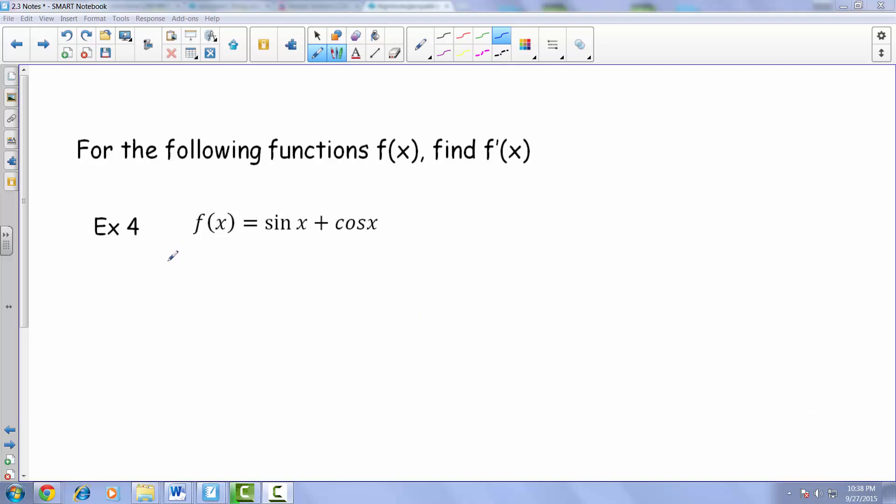If you take the derivative of f of x, you end up with f prime of x is equal to the derivative of sine of x. If you recall from our properties with derivatives, that comes out to be cosine of x.